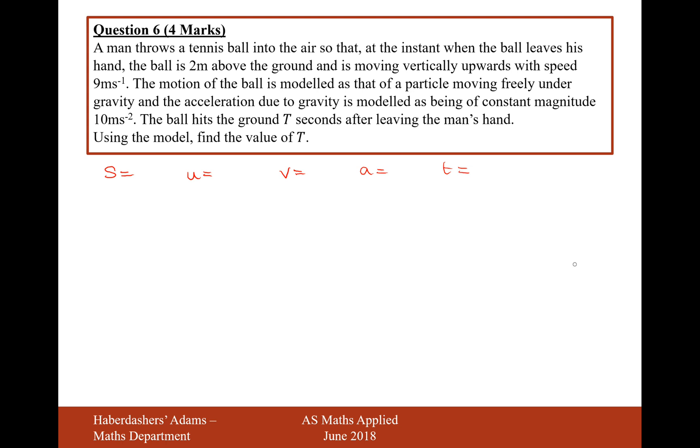Sometimes you might find it helpful to draw a little diagram of what's happened here. Effectively, what's happened is this is the ground. The man is 2 metres before he throws the ball. It goes up and then down and hits the floor.